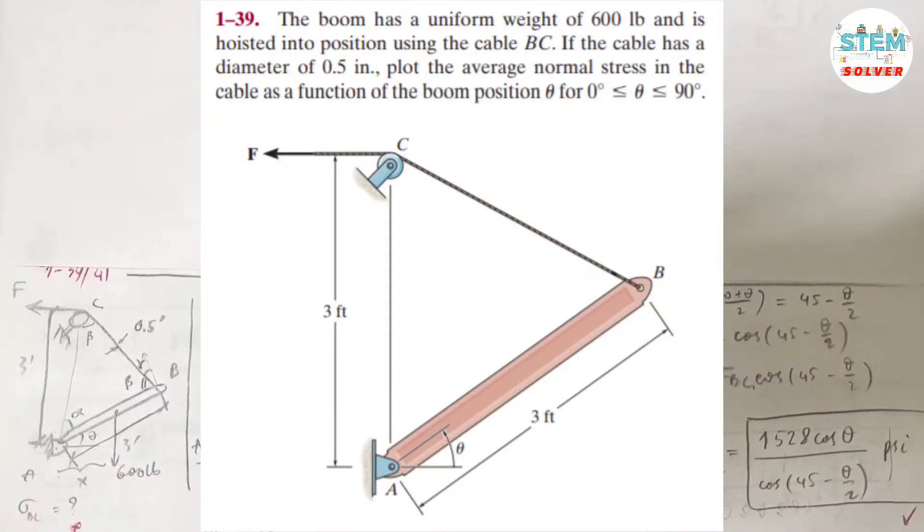The boom has a uniform weight of 600 pounds and is hoisted into position using the cable PC. If the cable has a diameter of 0.5 inch,